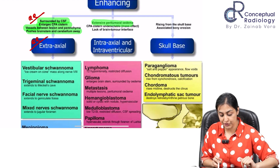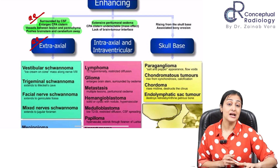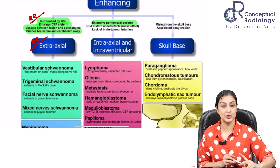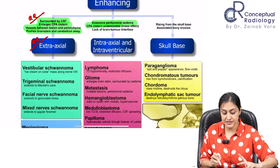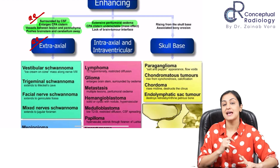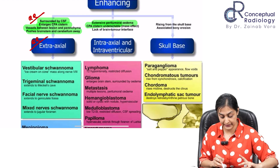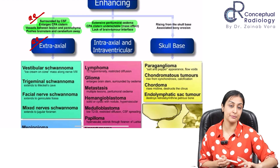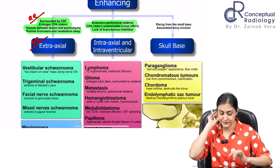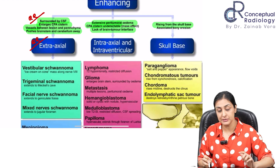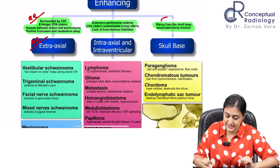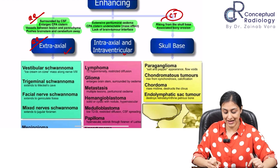Intra-axial lesions will show peritumoral edema — extra-axial lesions do not typically produce edema. Importantly, an intra-axial lesion will compress the cistern, while extra-axial lesions enlarge it. This is where CISS becomes very important. We also will not see the brain-tumor interface like a CSF cleft or vessel cleft in intra-axial lesions.